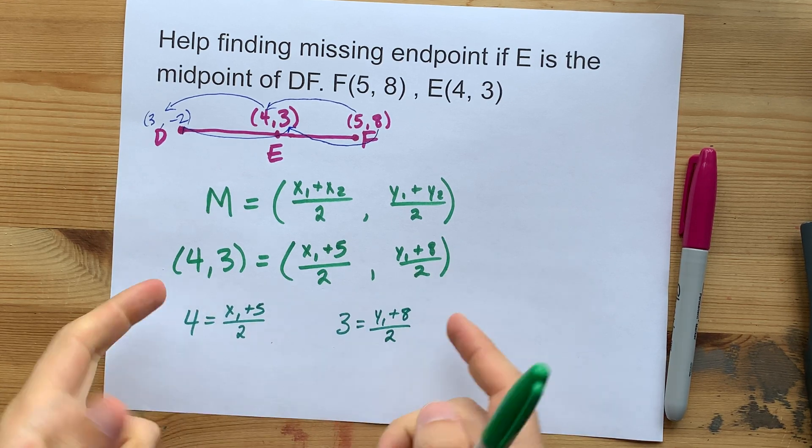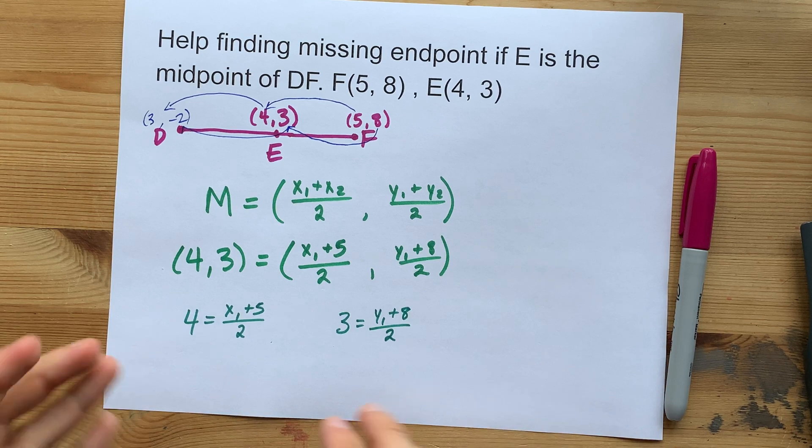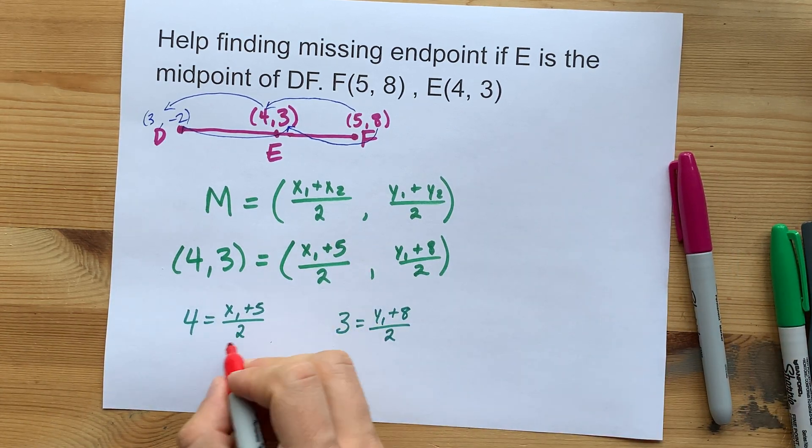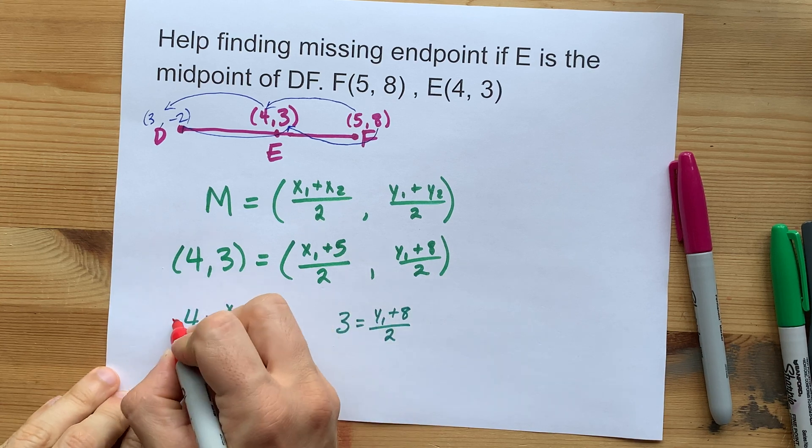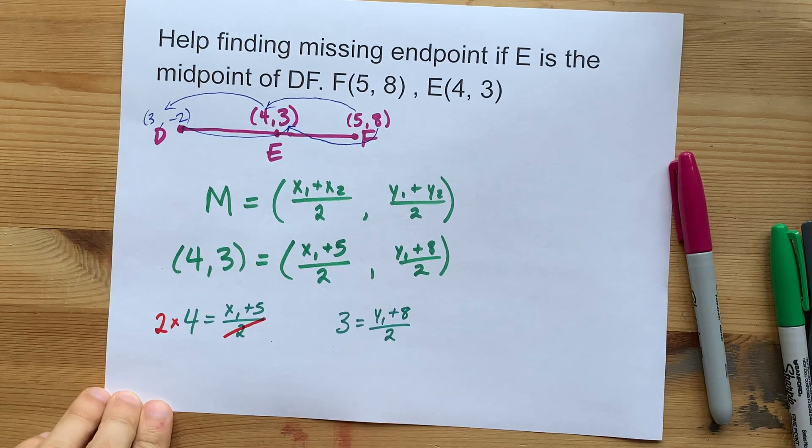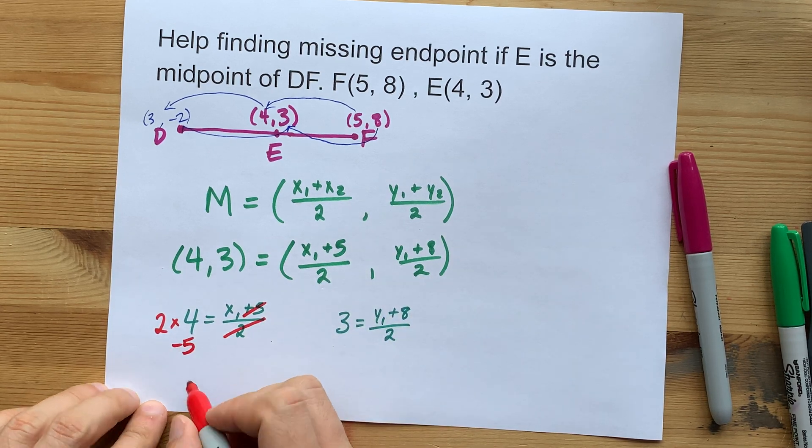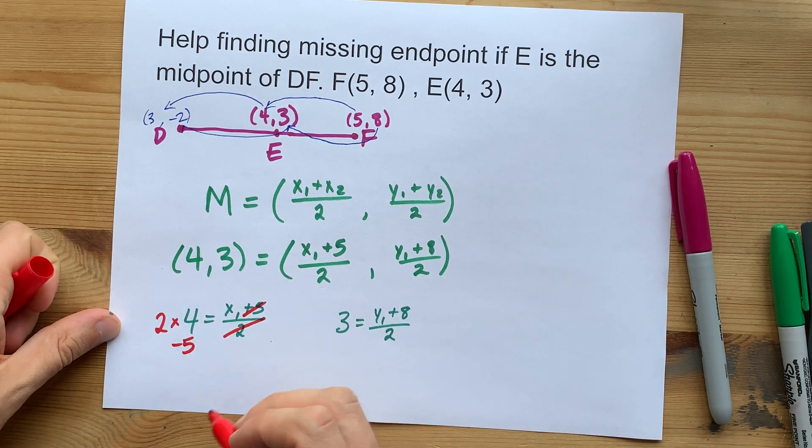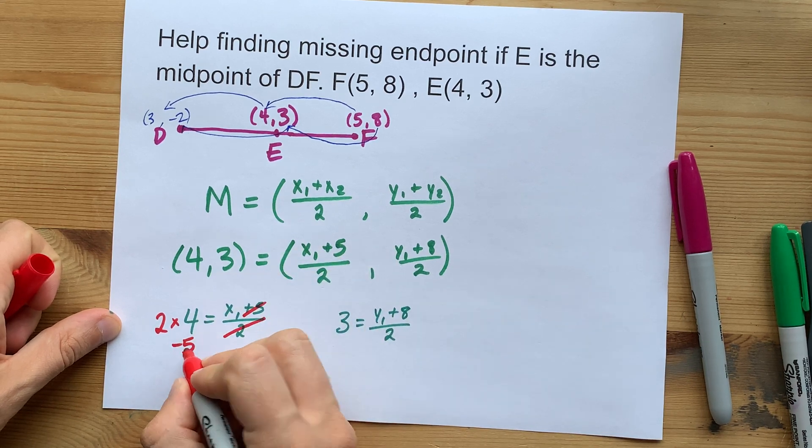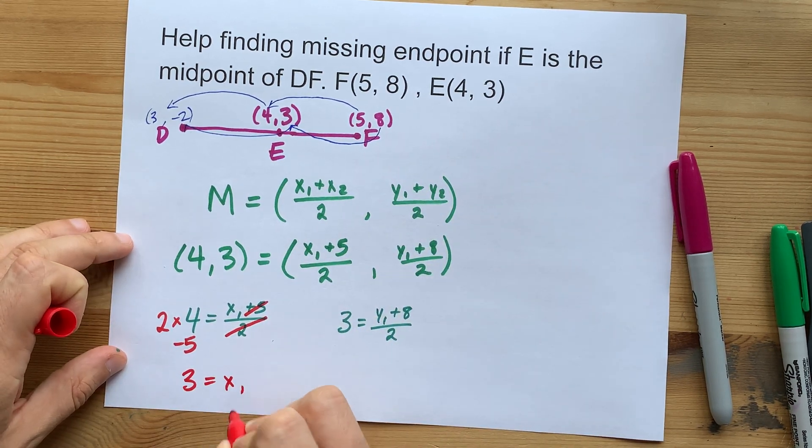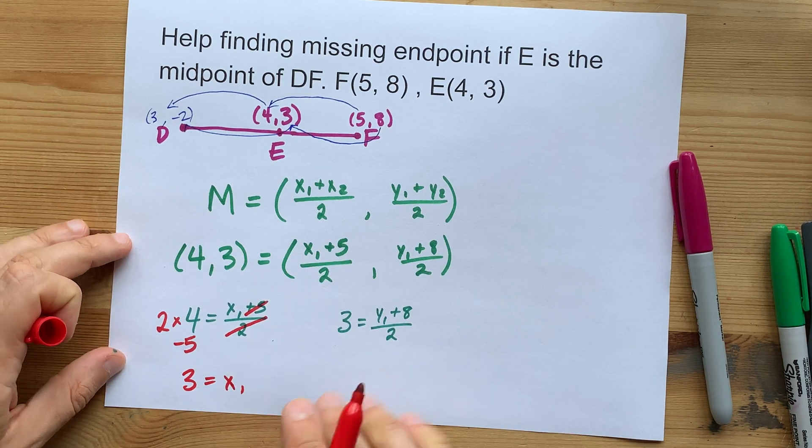Now your job would be to solve these with algebra. To undo dividing by 2 on this side, we would times by 2 on that side. To undo the adding 5, we would take away 5. I end up with 2 times 4 is 8 minus 5 is 3. So we got the x coordinate of the other endpoint. Oh look, it's the same number we thought it would be.